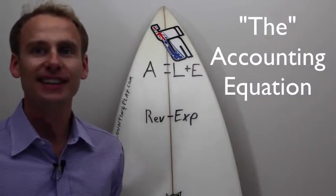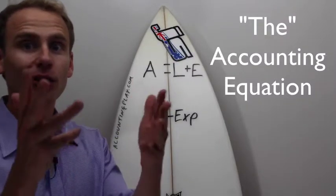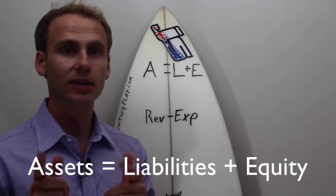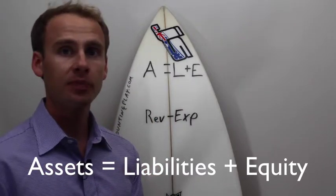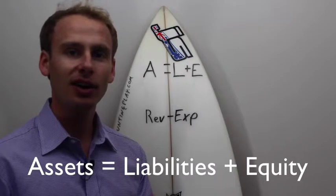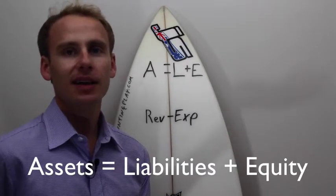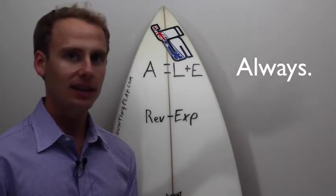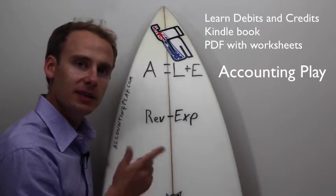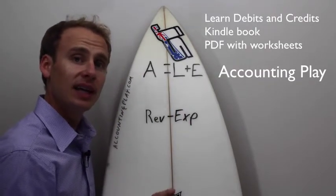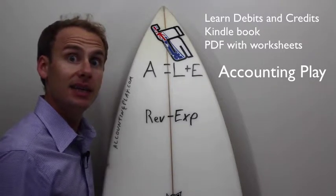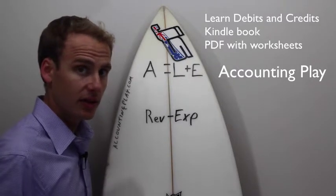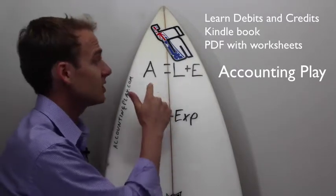Hi, welcome to Accounting Play. It's John Gillingham. Today, we're going over this old-fashioned diagram, the accounting equation. Assets equals liabilities plus equity — that is our fundamental accounting equation, and it's kind of like our logo for Accounting Play. If you haven't already, subscribe below. I have lots of visual tutorials and a game, Accounting Play: Debits and Credits in the iOS store. I'll teach you all this. So, the diagram we're going to start with is just the fundamental accounting equation.